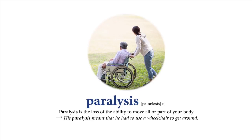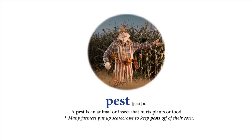Pest: A pest is an animal or insect that hurts plants or food. Many farmers put up scarecrows to keep pests off of their corn.